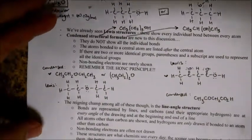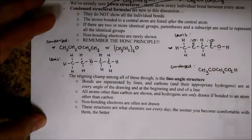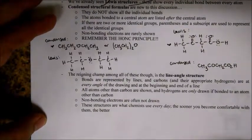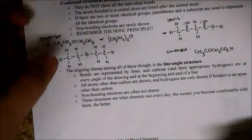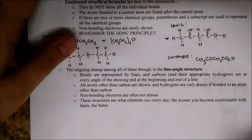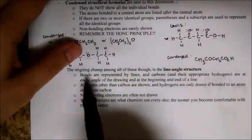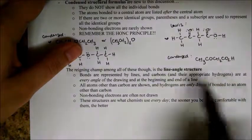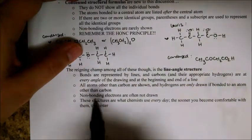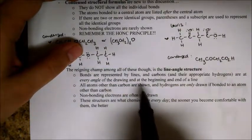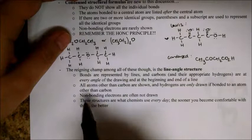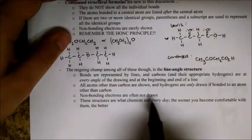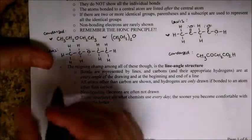In the end, what you really want to get to are the line angle structures — the mac daddy of them all. These are the quickest way to draw organic molecules. Here in line angle structures, bonds are represented by lines, and carbons and their appropriate hydrogens are at every angle of the drawing and at the beginning and end of a line. All atoms other than carbon are shown, and hydrogens are only drawn if bonded to an atom other than carbon. Non-bonding electrons are often not drawn. These structures are what chemists use every day.